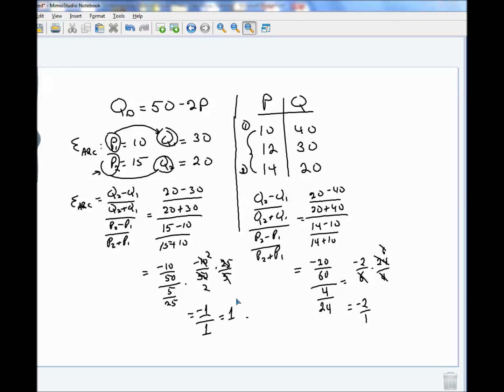You might ask yourself, well, what does it mean? And there are some rules. Point elasticity of demand is always negative. So we ignore the sign. So taking the absolute value of the elasticity, if it's greater than 1, it's elastic.